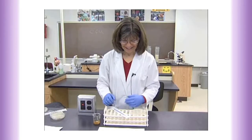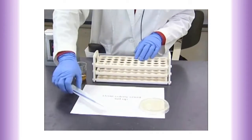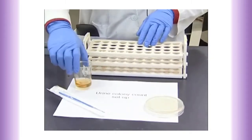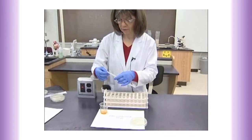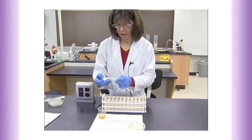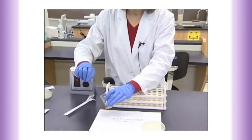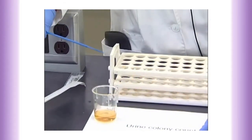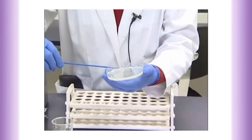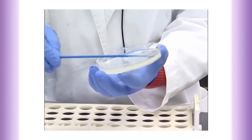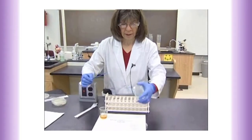The colony count setup requires the agar plate to grow the organisms on, a one microliter loop, and the urine specimen. Take the one microliter calibrated loop — this is sterile — open carefully, and pick up one loopful, which is calibrated to be one microliter of specimen. It is streaked straight down the center of the plate and then back and forth to spread out the colonies so that you can get a colony count reading after it has incubated.